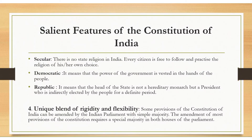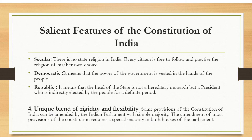Secular means there is no state religion in India, and every citizen is free to follow and practice the religion of his or her own choice. Democratic means that the power of the government is vested in the hands of the people. Republic means that the head of the state is not a hereditary monarch, but a president who is indirectly elected by the people for a definite period.